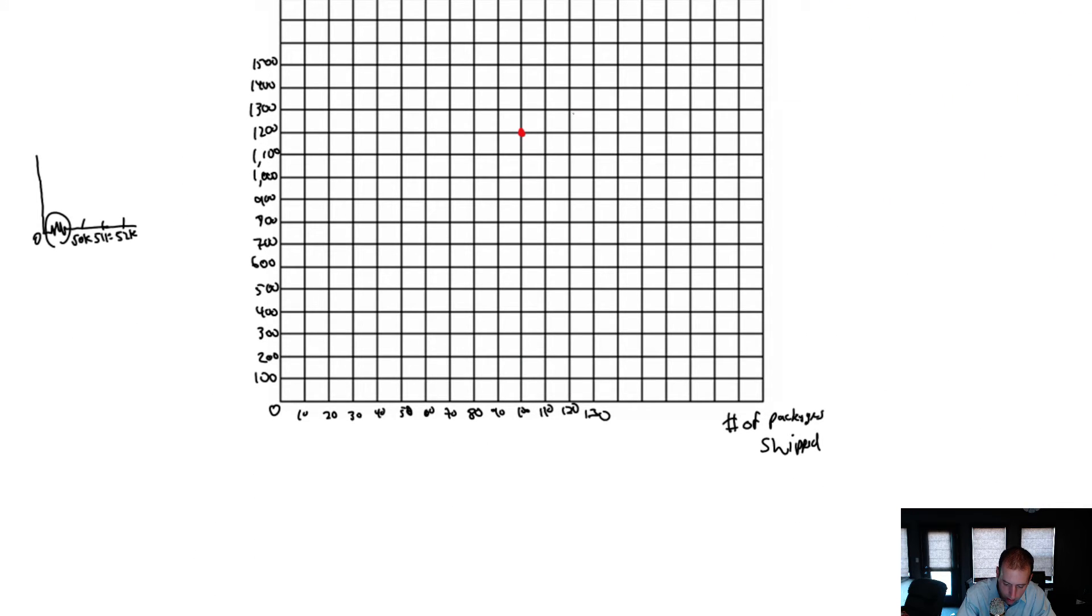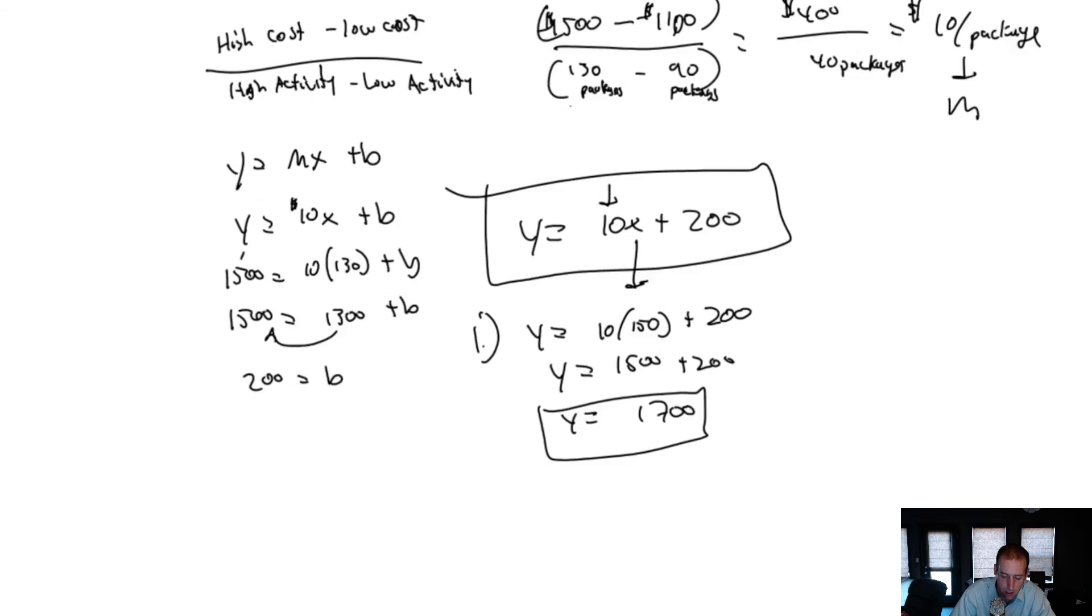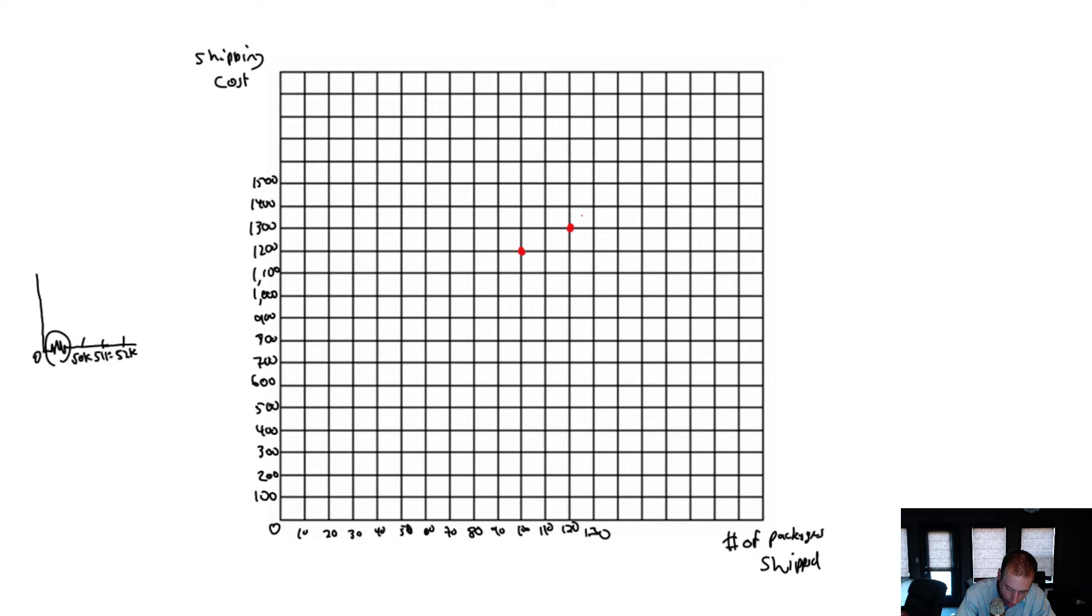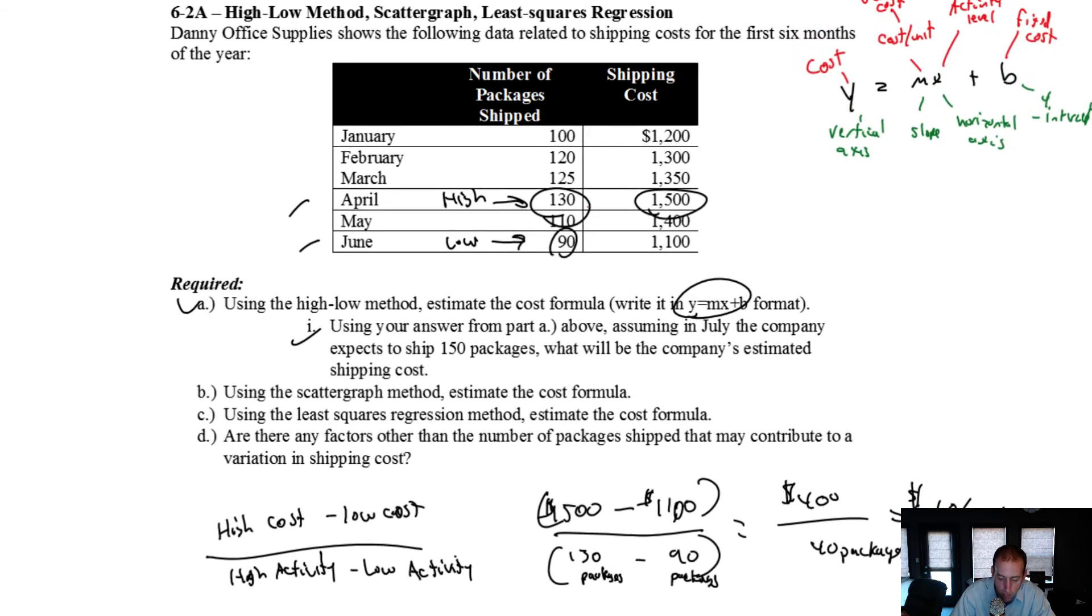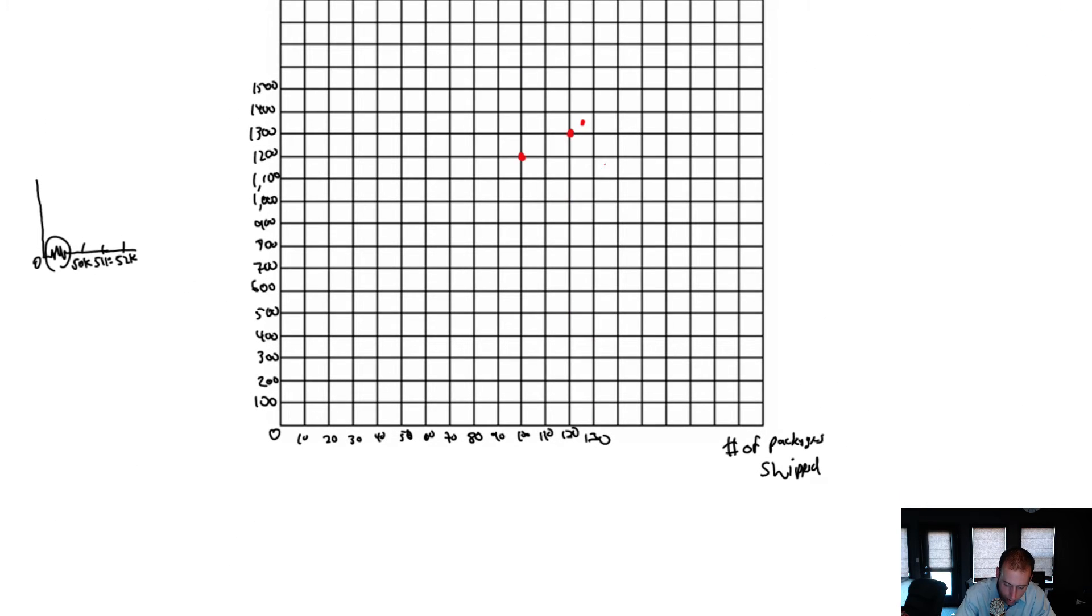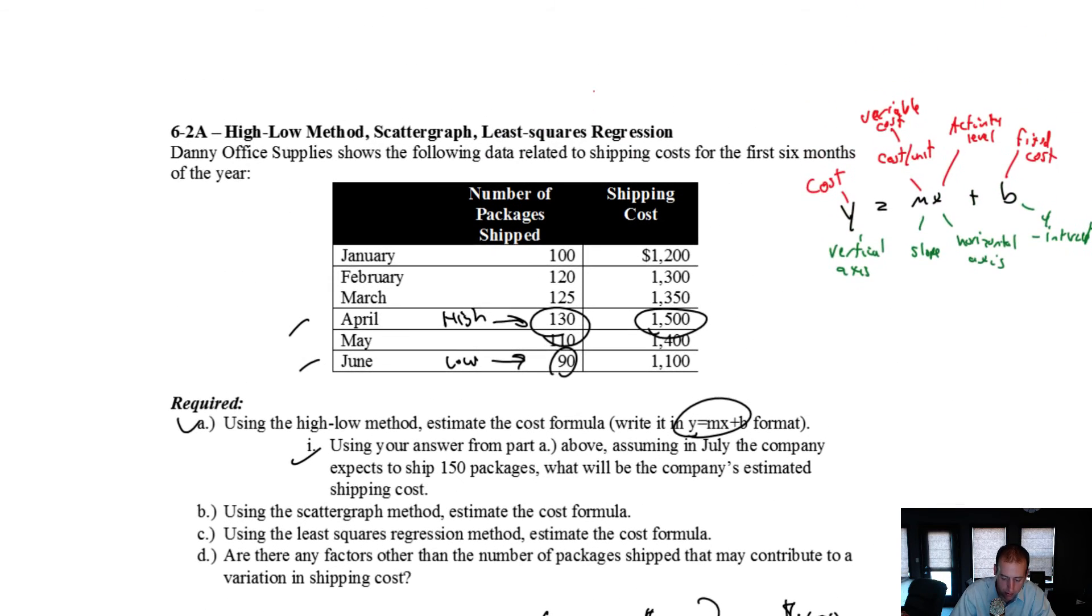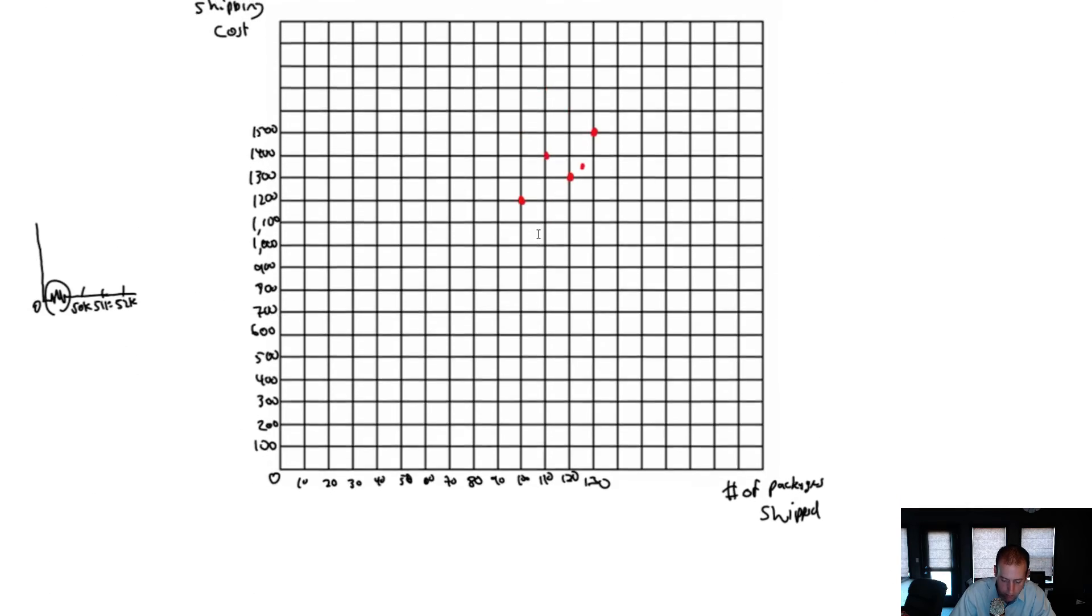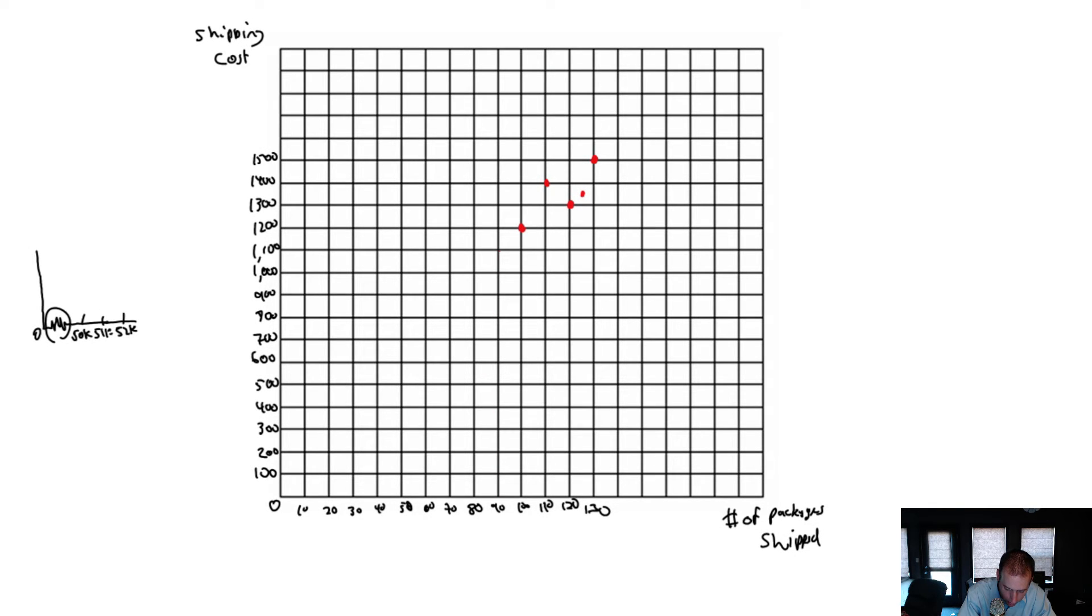For March, 125 and 1350—so halfway between 120 and 130, and halfway between 1300 and 1400. Next is 130 and 1500, and you can see it's not making something really linear here—it's a little bit all over the map. Next, 110 and 1400. It's definitely all over the map. And last, 90 and 1100. There we are.